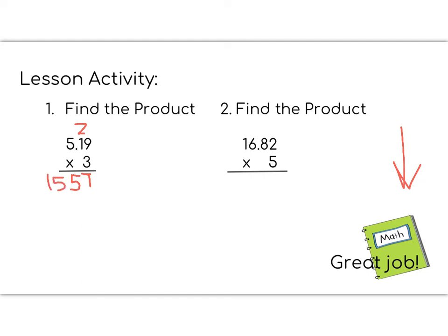Now we are going to count the decimal places. So 1, 2 decimal places means that we need to match that in our answer. 1, 2 decimal places. So my answer is going to be 15.57.